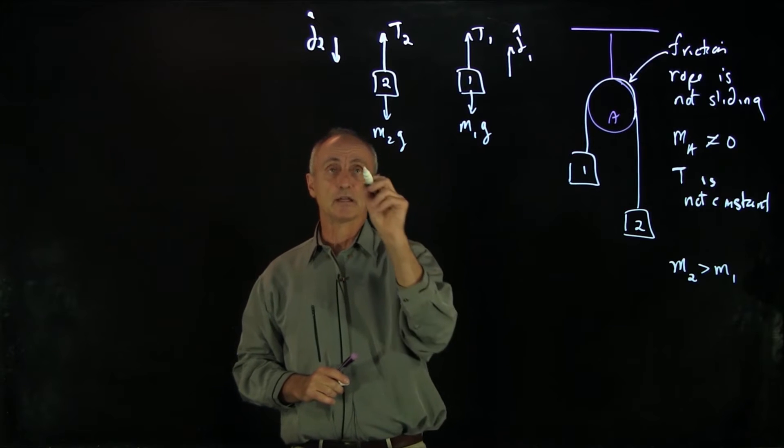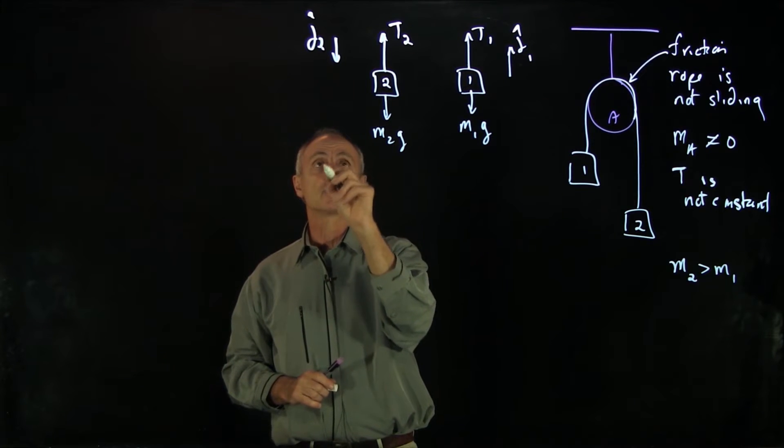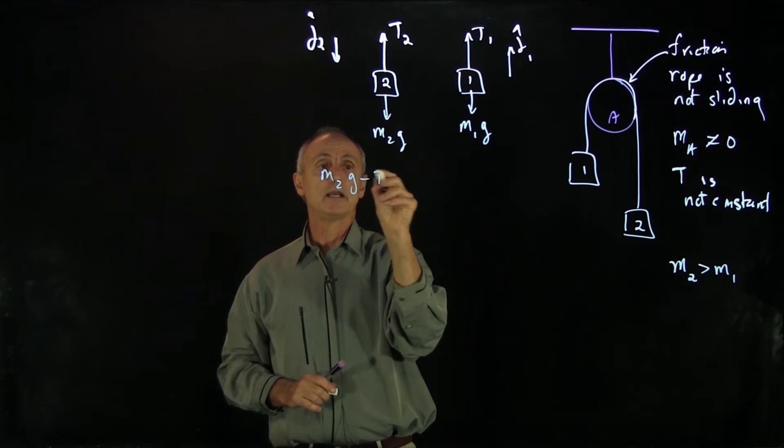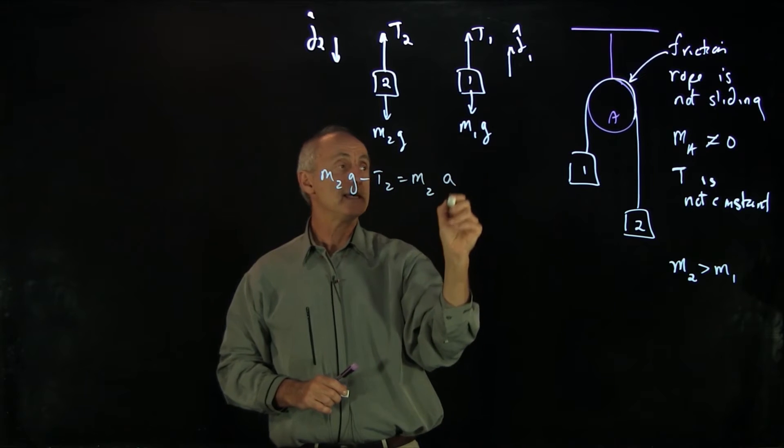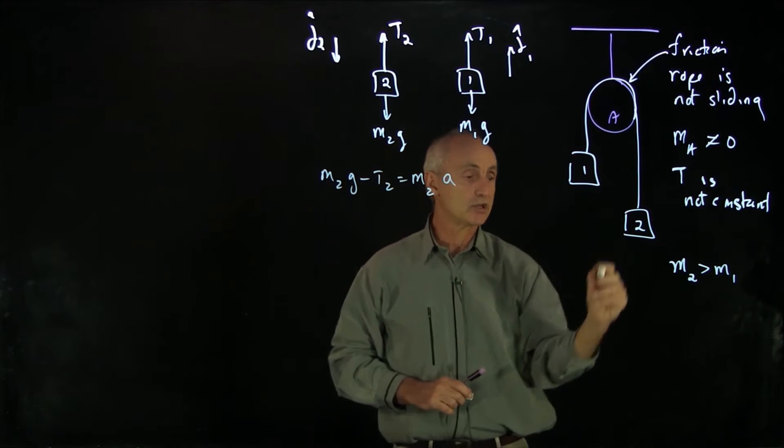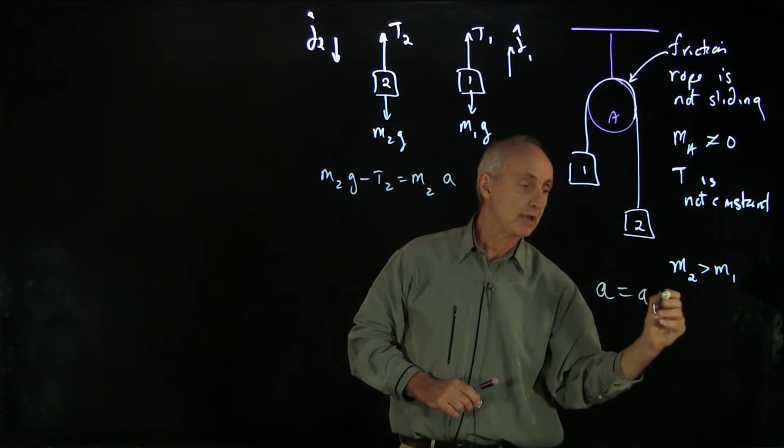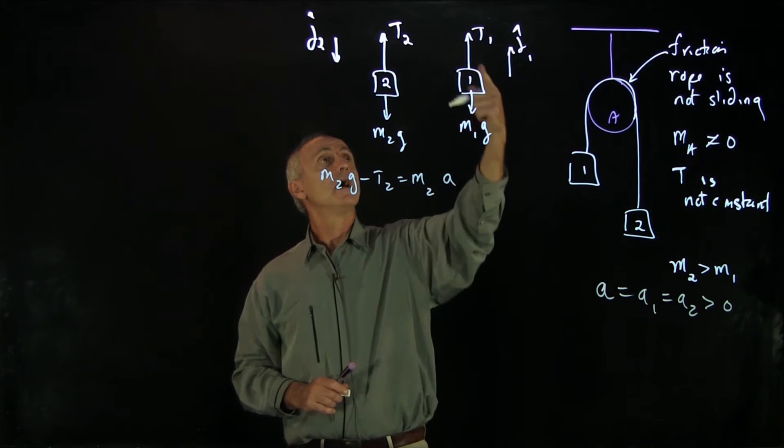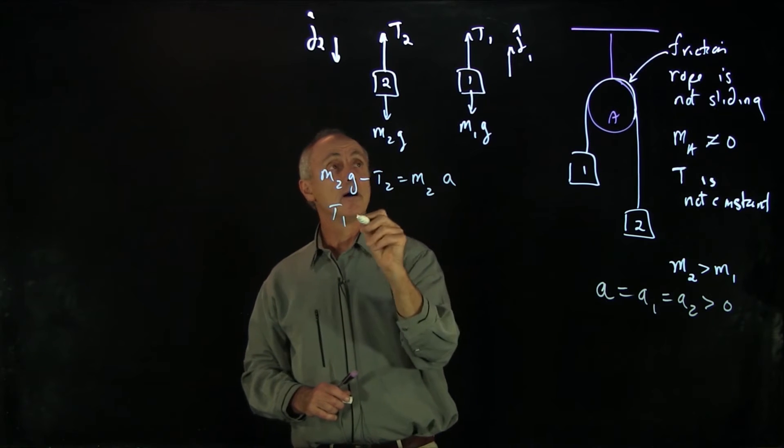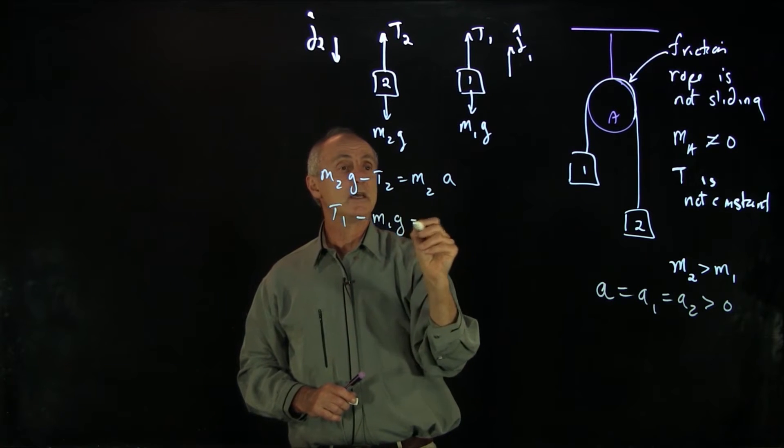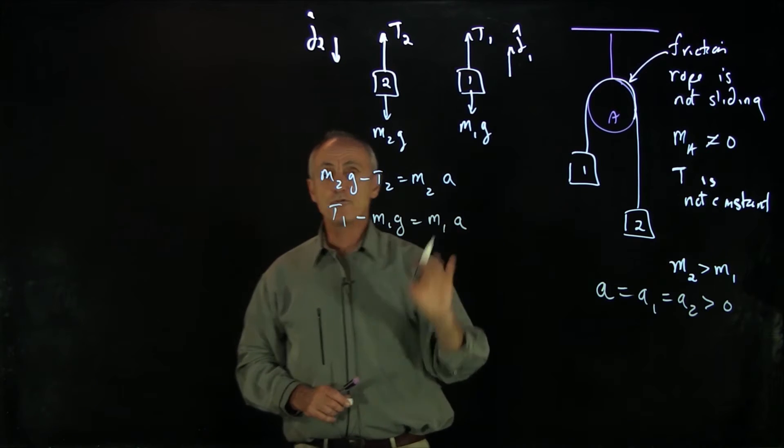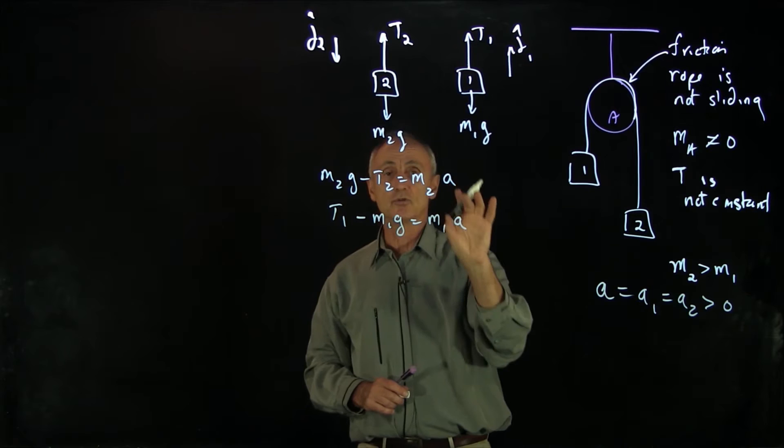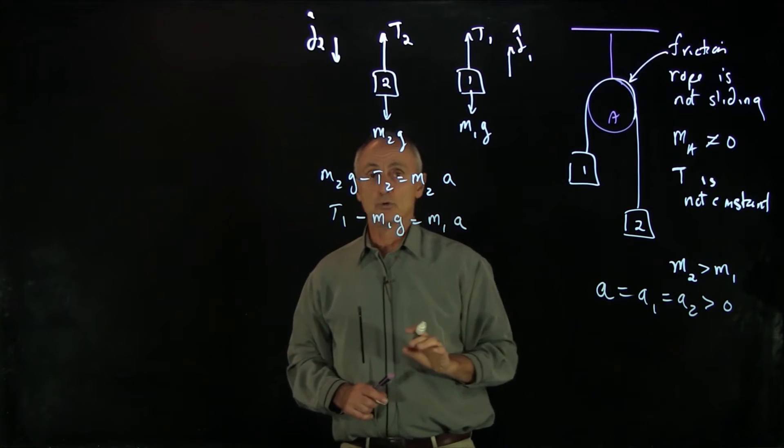Now I can write Newton's second law for both of these. For block two, positive down, M2g minus T2 equals M2a. It's the same acceleration in the rope. a equals a1 equals a2. They're all positive. For one, I have T1 positive up minus M1g equals M1a. So far, these are my two equations. I have three unknowns: T1, T2, and the accelerations, and only two equations.